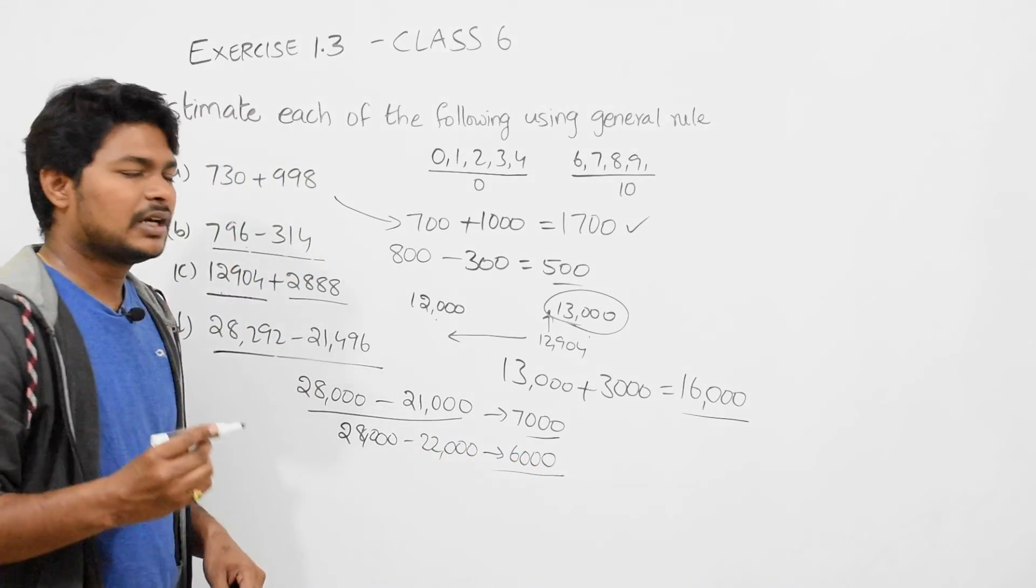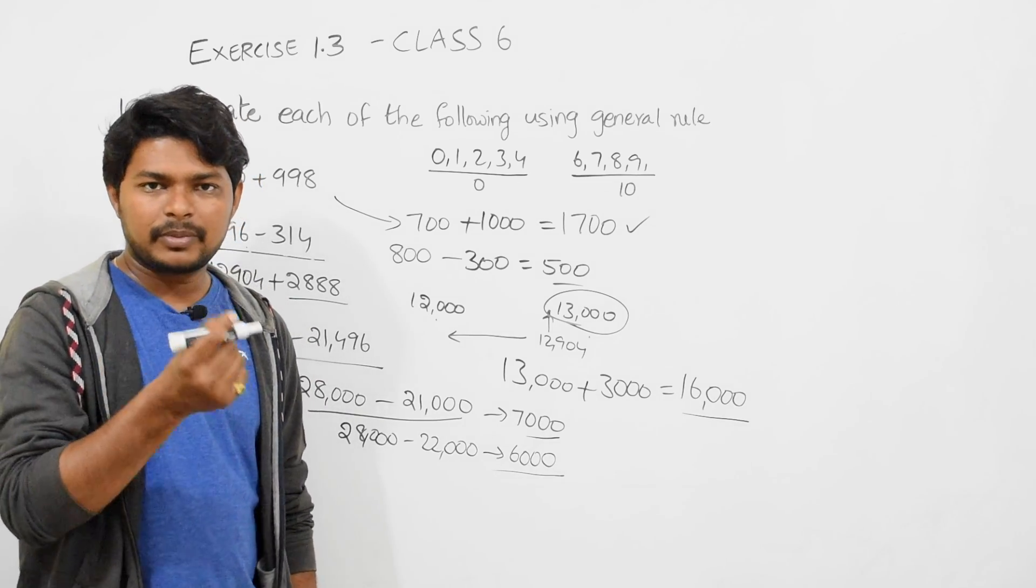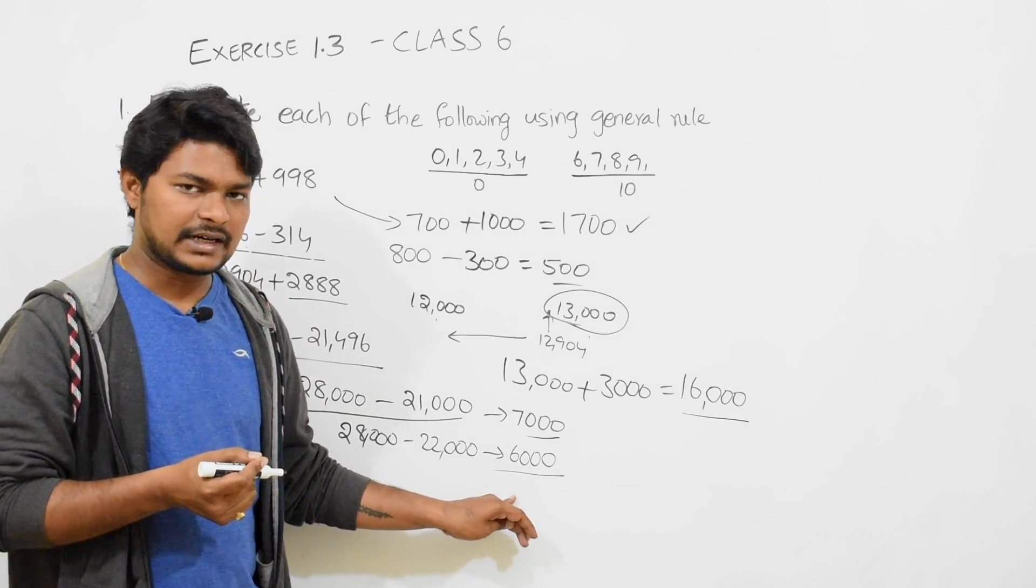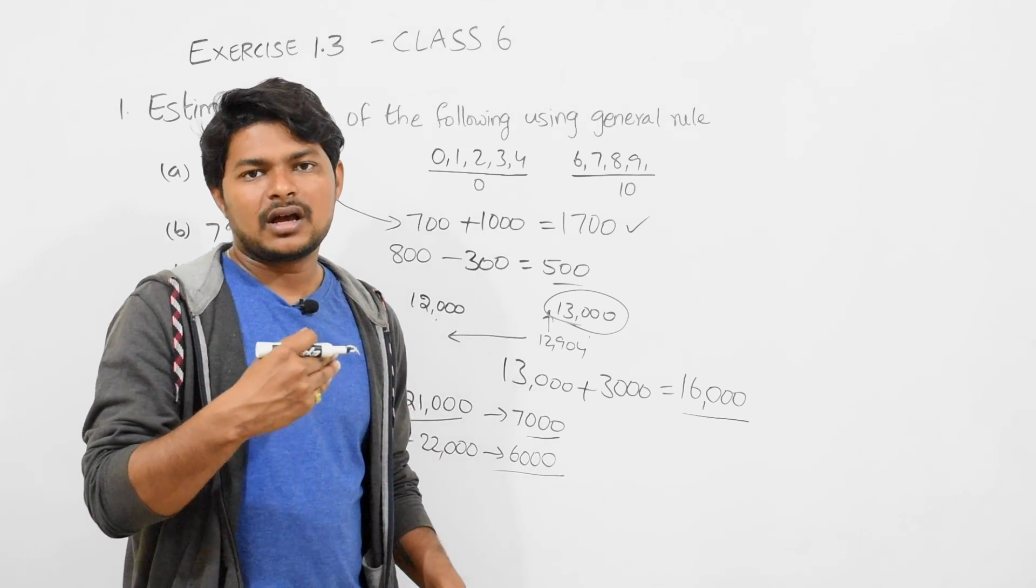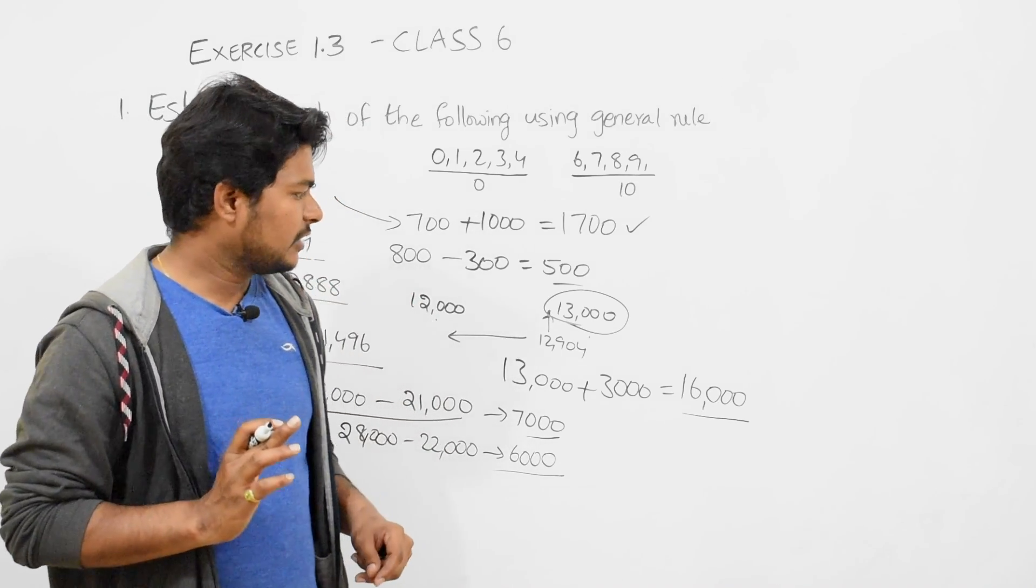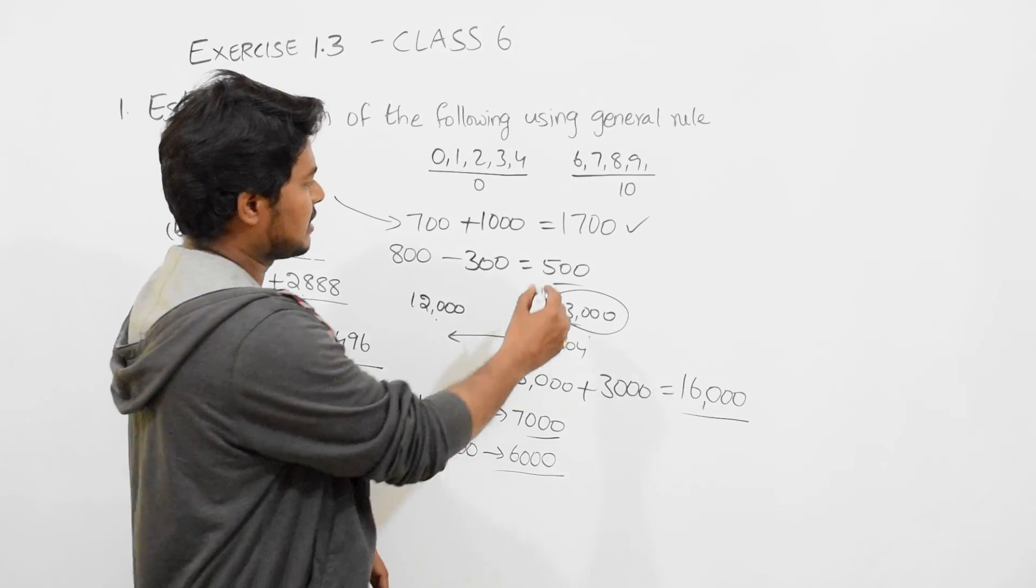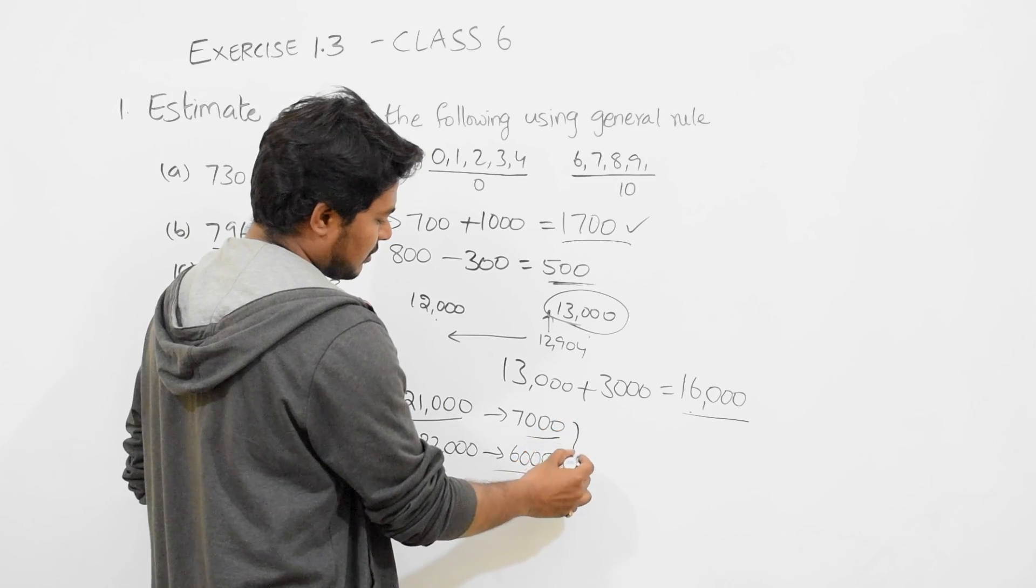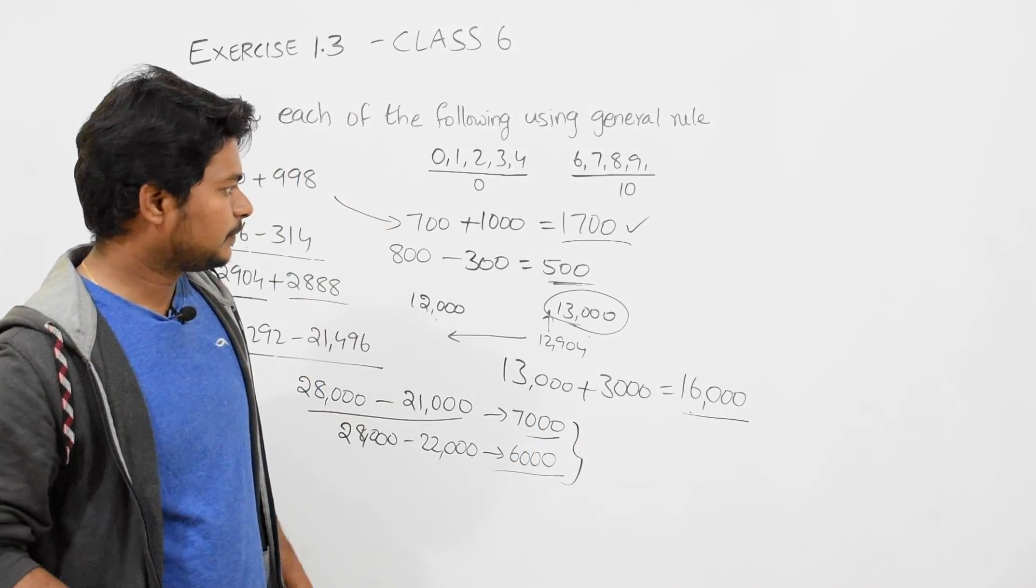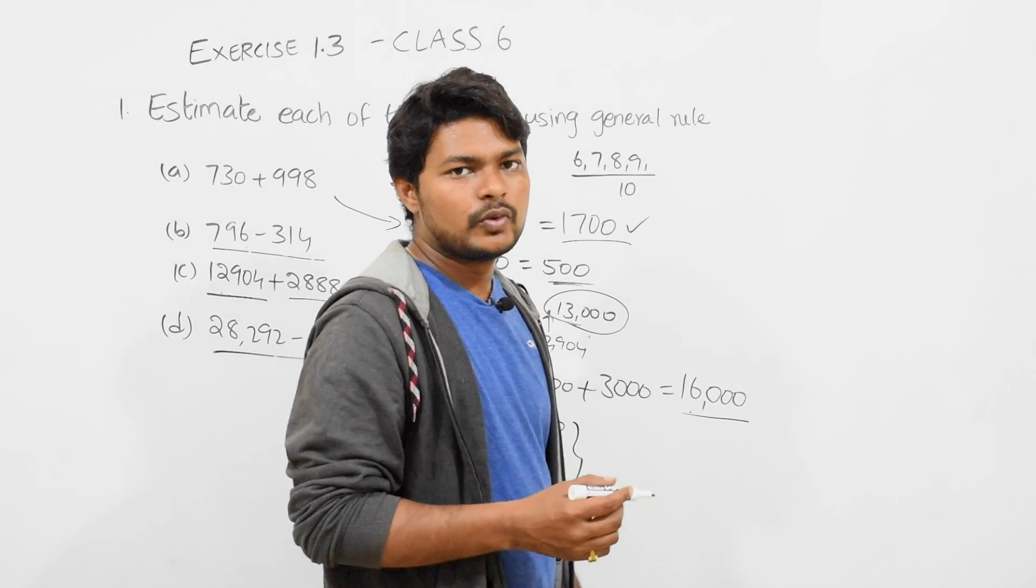In estimation, there is no exactly one particular thing that we can say as correct. We try to estimate as much as it satisfies our requirement. So these are the answers: first answer is this one, second answer this one, third answer this one, fourth answer any one of them.